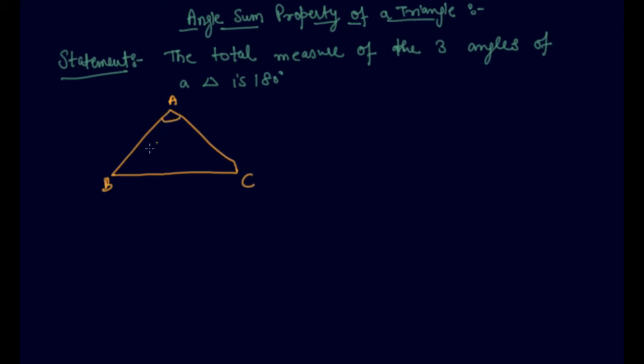What this statement says is that angle a plus angle b plus angle c equals 180 degrees, means the total measure of the three angles. These are the three angles and the measure of these three angles would be 180 degrees.